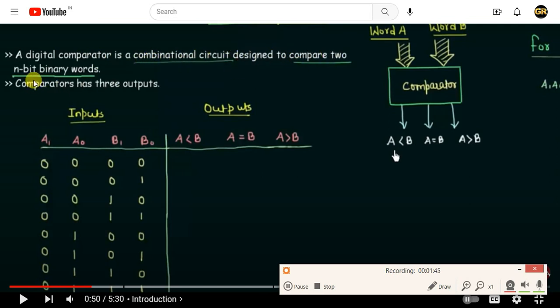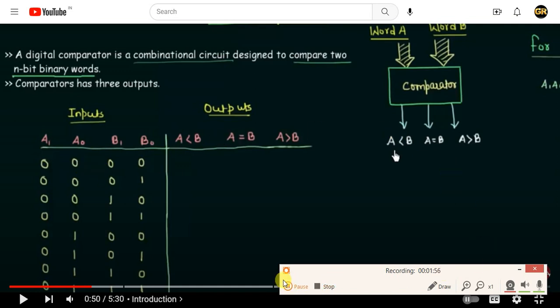A digital comparator is a combinational circuit designed to compare two n-bit binary words. Here n is 2, but you can also do 4-bit or 8-bit comparison. Now go to the program.